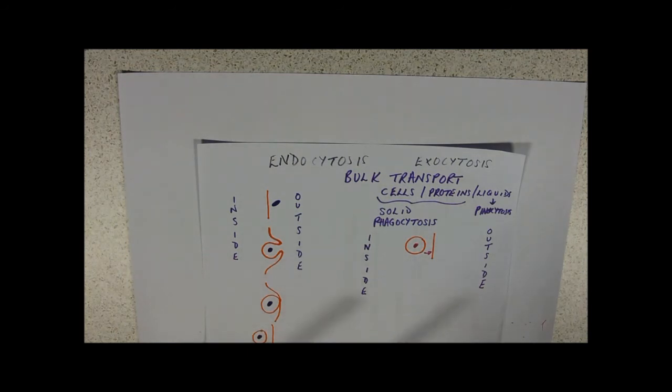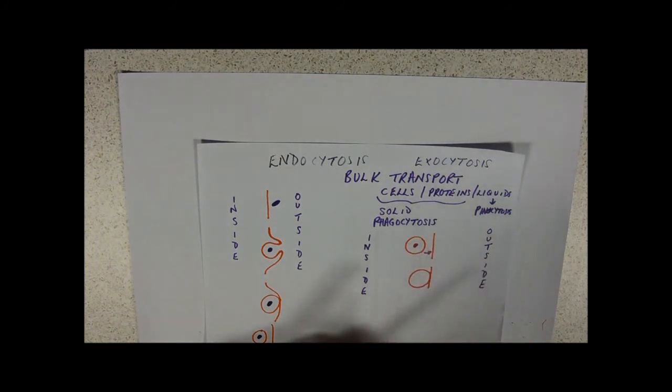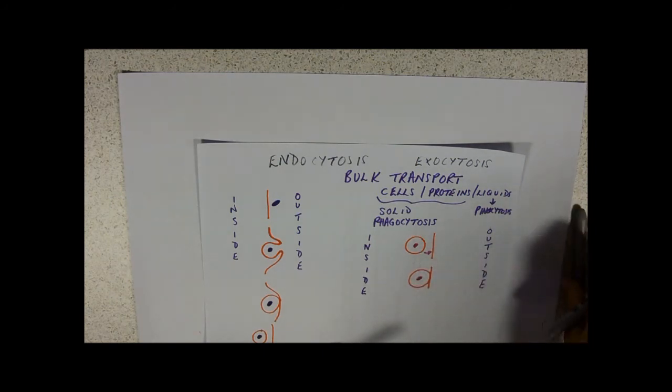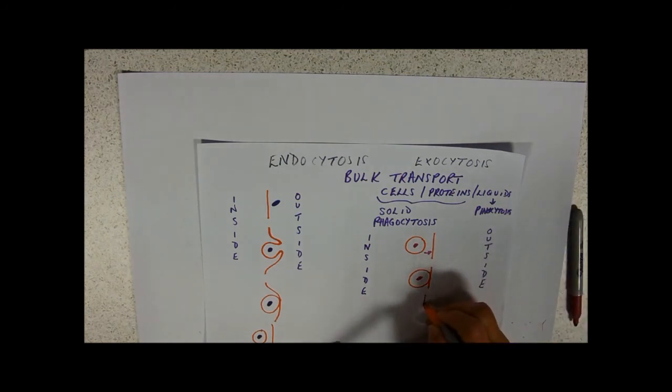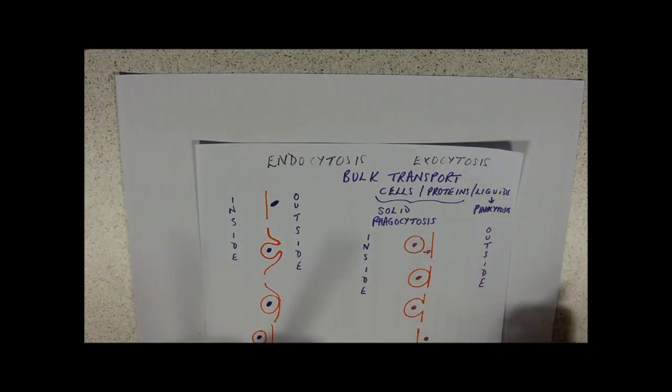The process is almost exactly the opposite of endocytosis so our vesicle is going to fuse with the cell membrane. The cell membrane will then sort of flatten out and miraculously our secretion has been moved to the outside of the cell.